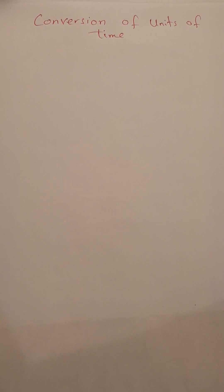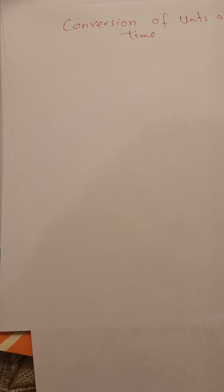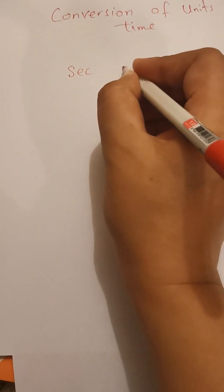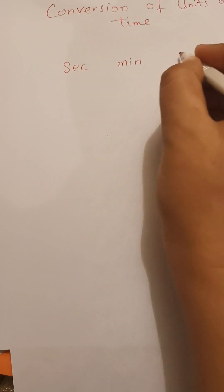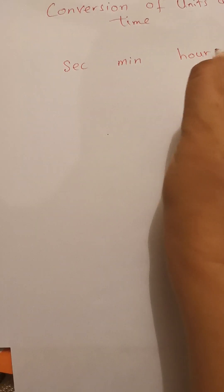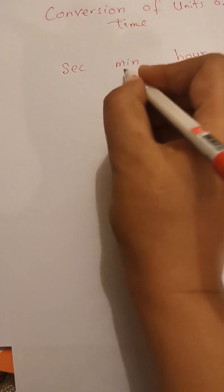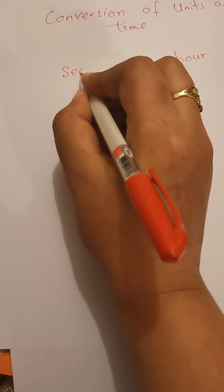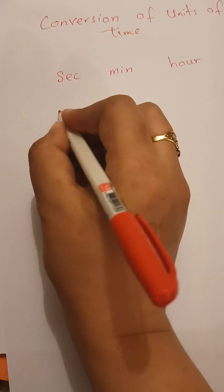The topic is conversion of units of time. We have seconds, minutes, and hours. Hour is the biggest, then minute is smaller, then second is the smallest. In one hour